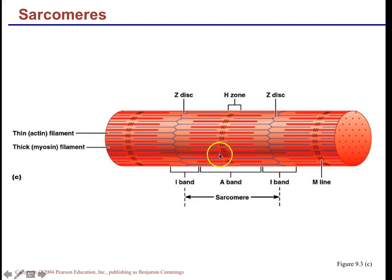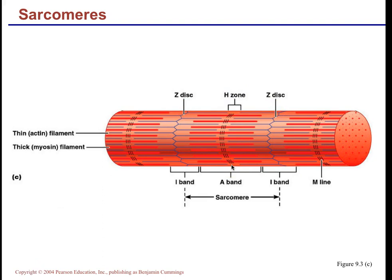Within the A band, histologists found subdivisions. The darker area composed of heavy myosin is called the H zone. The M line is in the middle of the sarcomere — it is a minor protein that appeared darker and was given a name. So to summarize: Z disc to Z disc defines the sarcomere; the I band is light; the A band is dark; the H zone is the darkest; and the M line marks the middle.